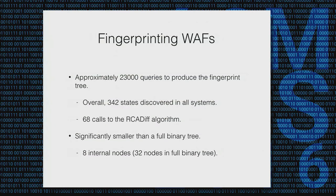Generating this fingerprint tree took 23,000 queries overall. We discovered 342 states in all systems combined, and had to do 68 calls to cross-check the models. This is a much smaller tree than the worst case full binary tree — we only have eight internal nodes, so it's pretty shallow, and we need only a small number of queries to identify the target firewall.